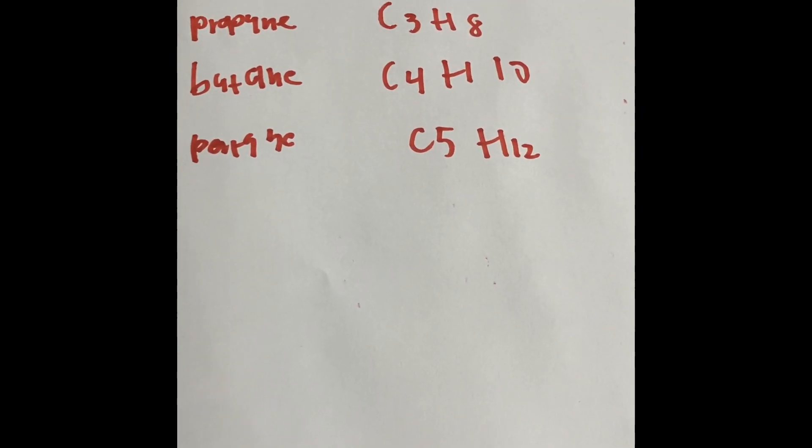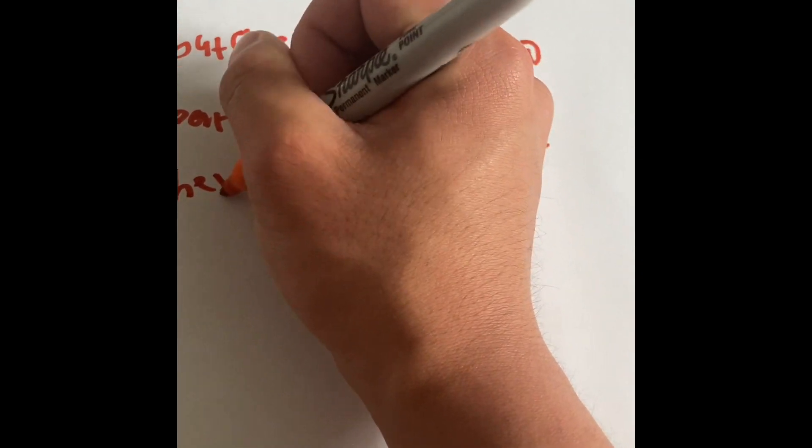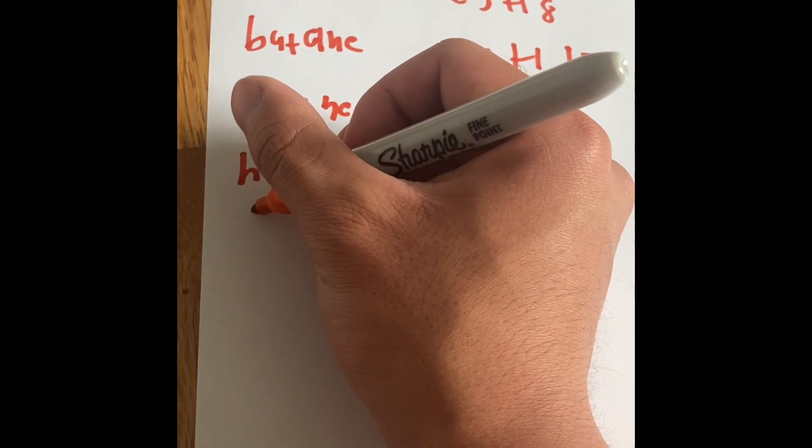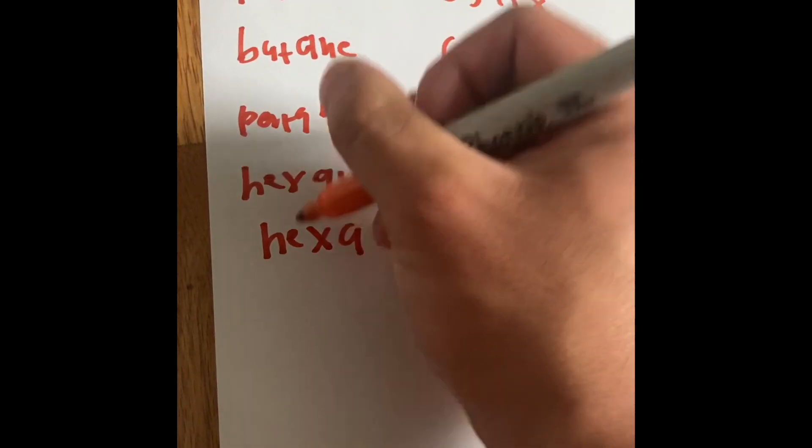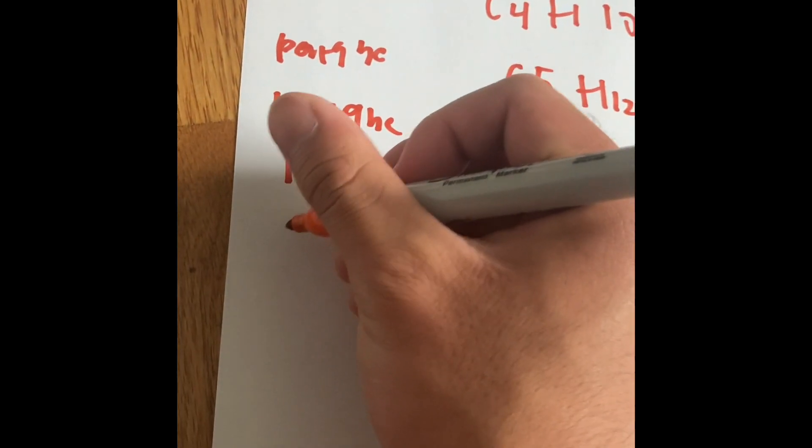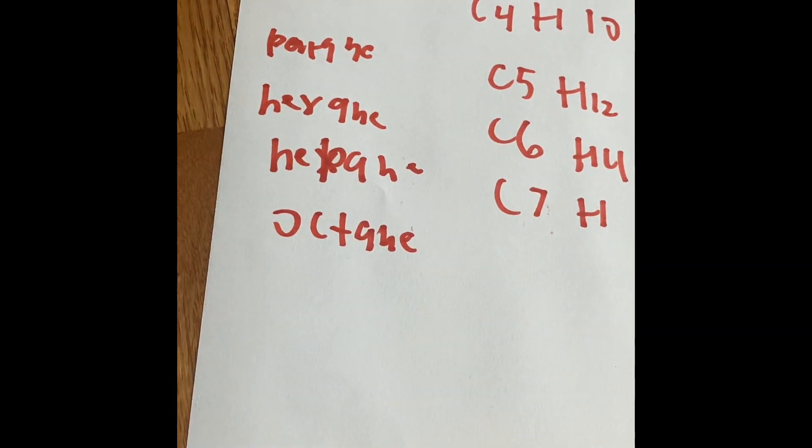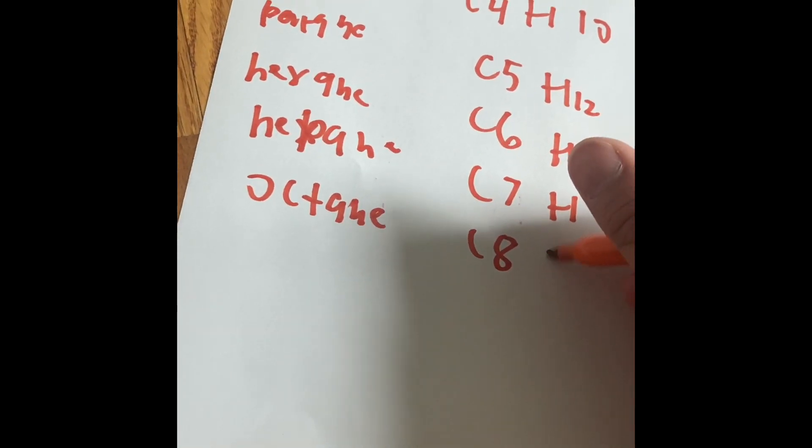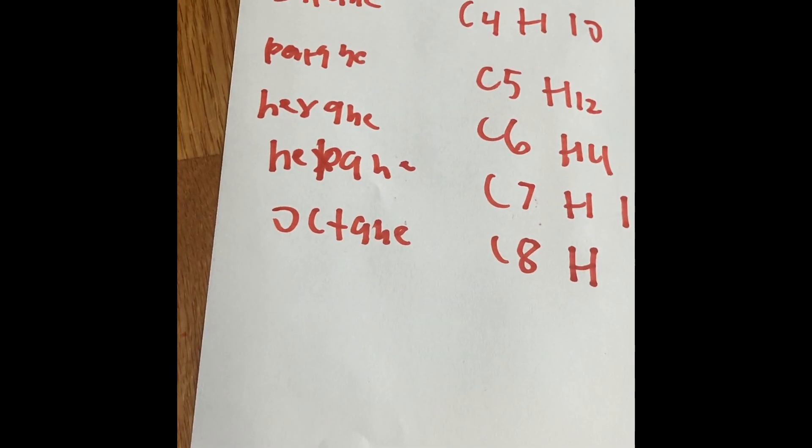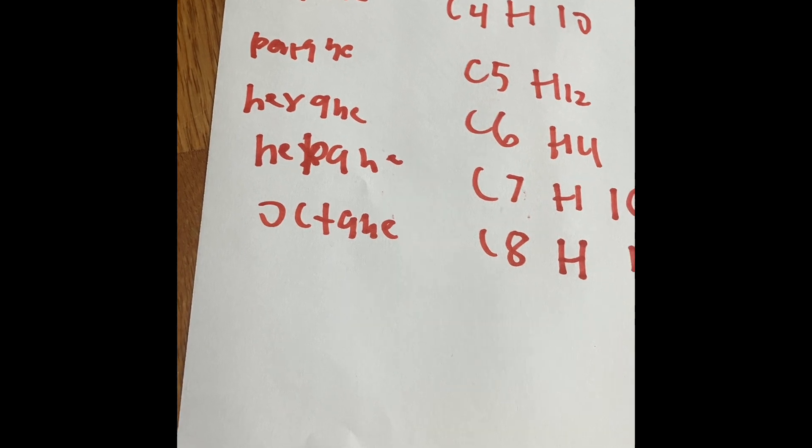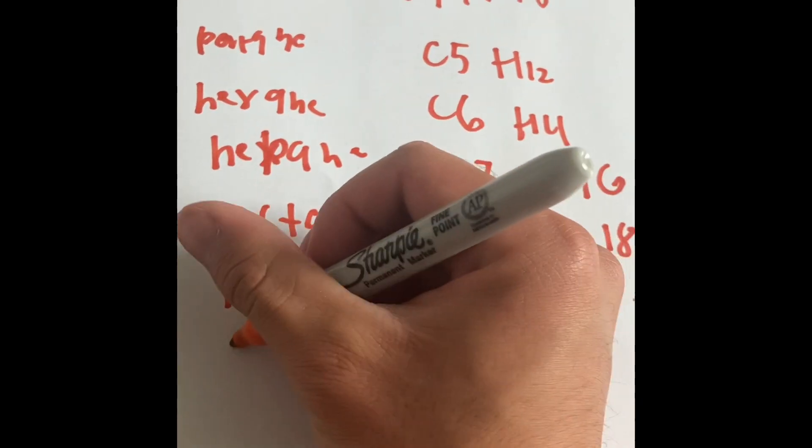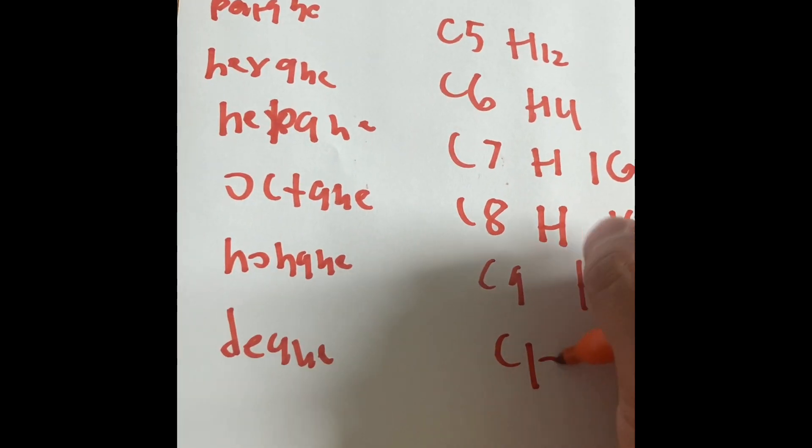The next thing we can do is go up to ten. Hexane is going to be C6H14. And the seven is heptane, that's C7H16. Octane, like the Octane Tower from the Lego movie, is C8H18. And then we are going to say nonane, and that's going to be C9H20. And we have decane, and that's C10H22.